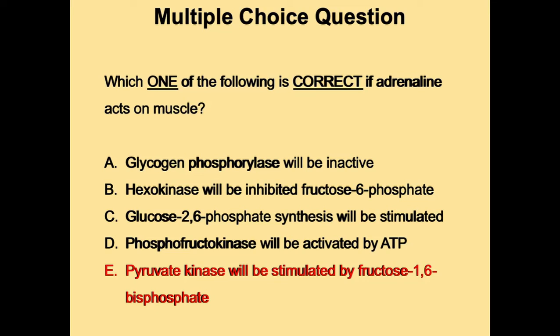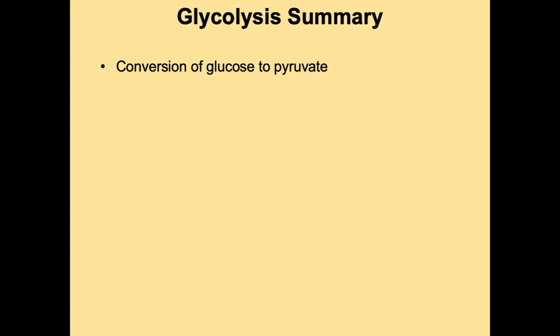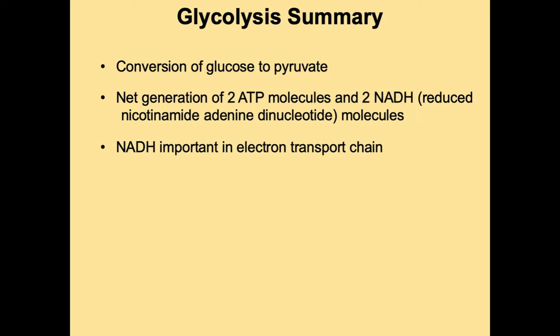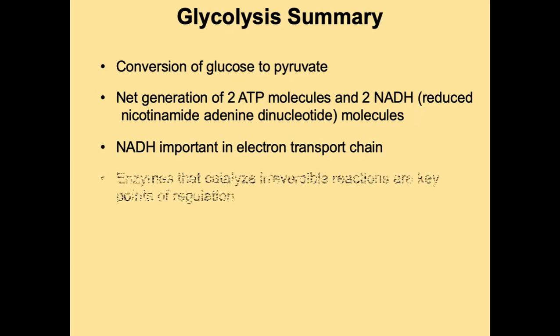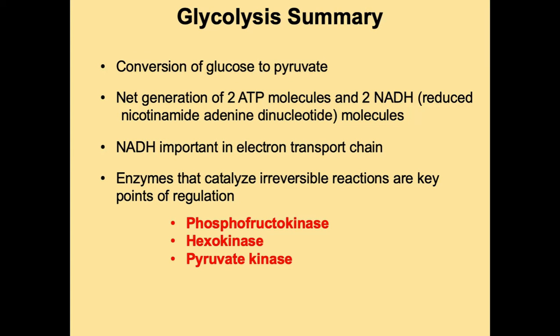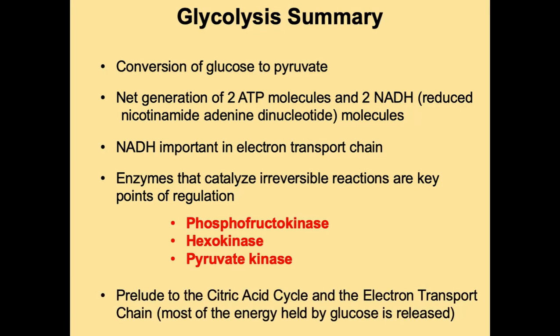To summarize: glycolysis is the conversion of glucose to pyruvate with net generation of two molecules of ATP and NADH (nicotinamide adenine dinucleotide), which is important in the electron transport chain. The key enzymes to remember are phosphofructokinase, hexokinase, and pyruvate kinase — all regulated by allosteric interactions. Glycolysis is the prelude to the citric acid cycle and electron transport chain, where most of the energy held by glucose is released, to be covered in future lectures.